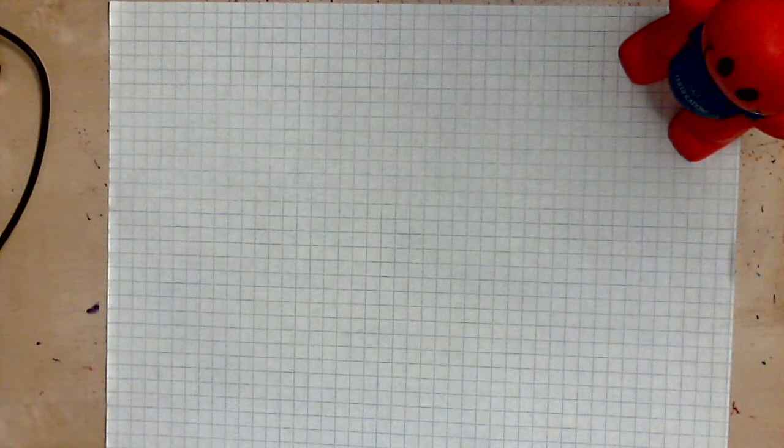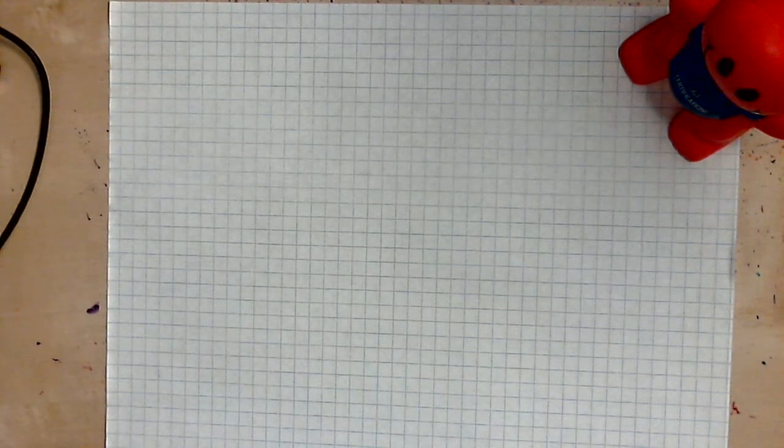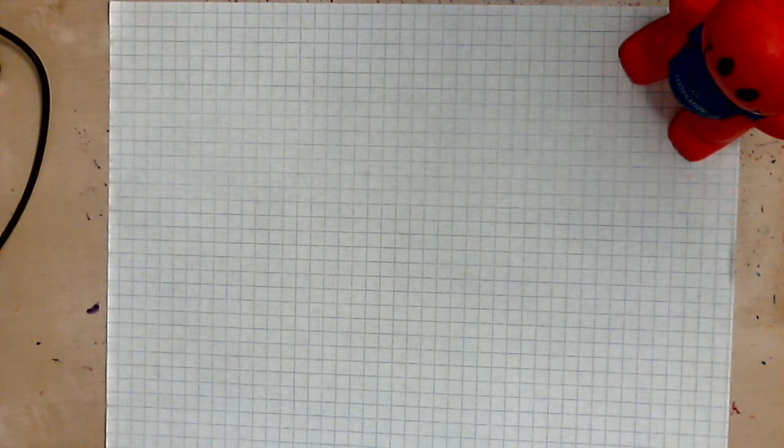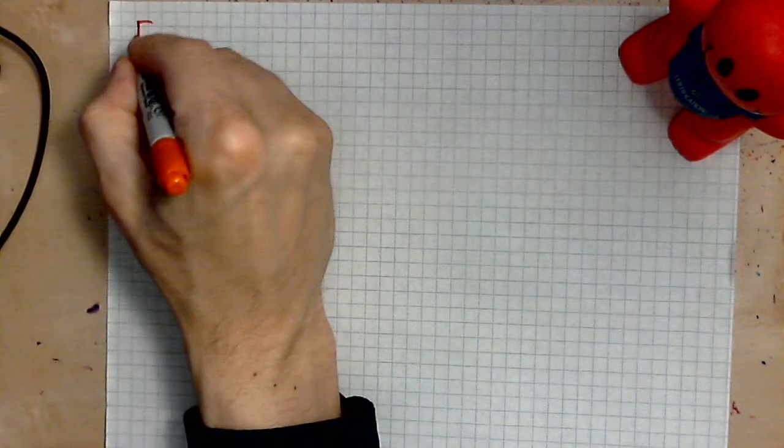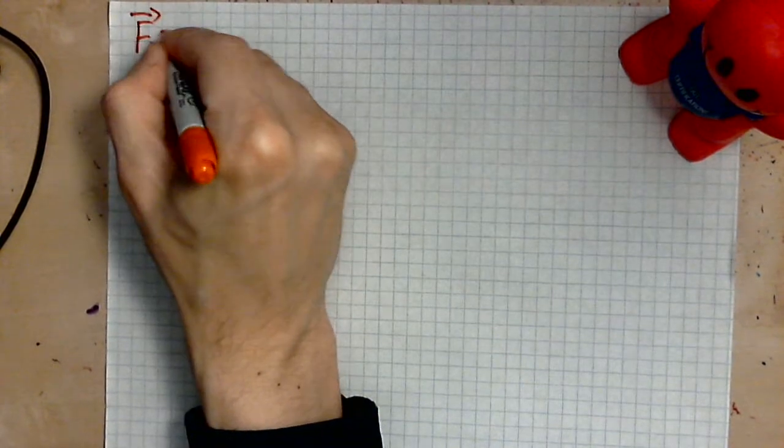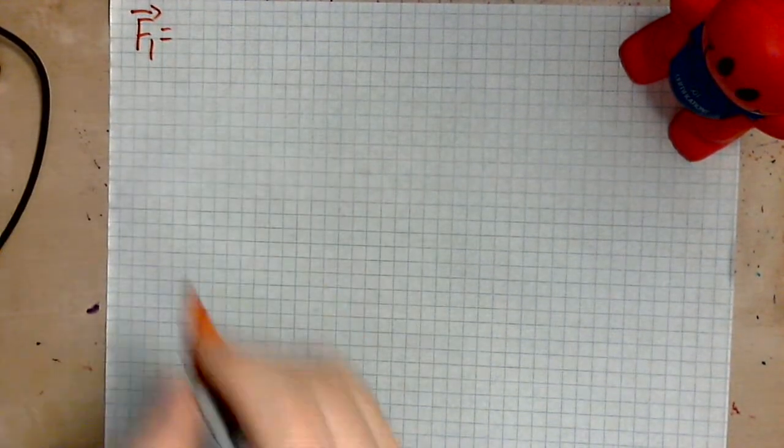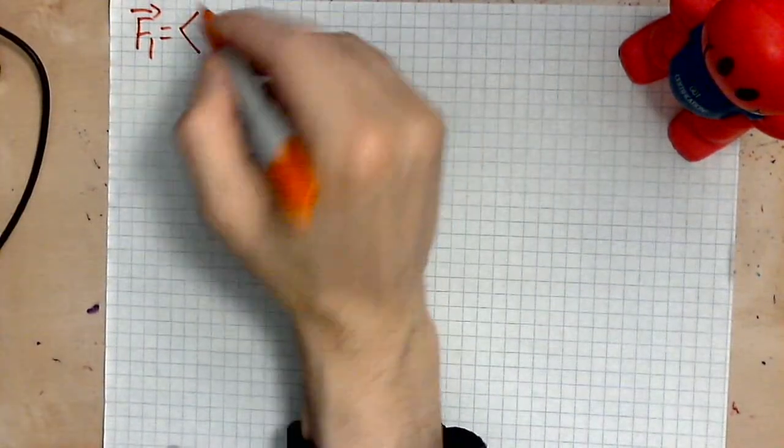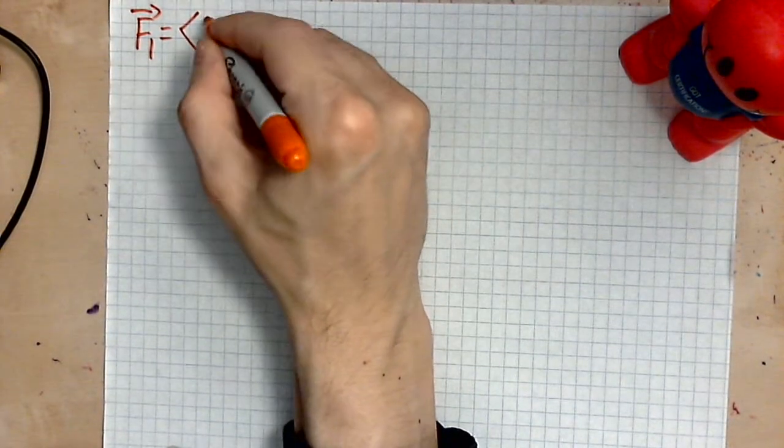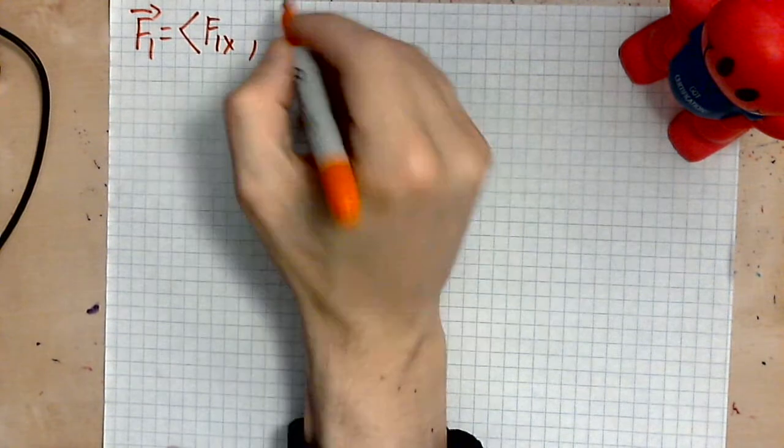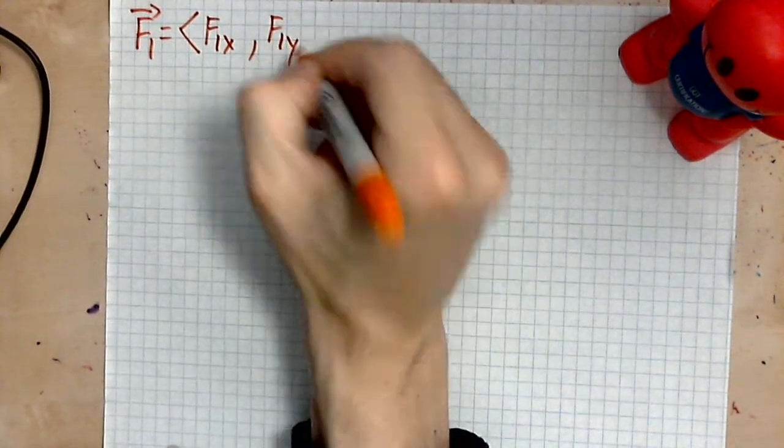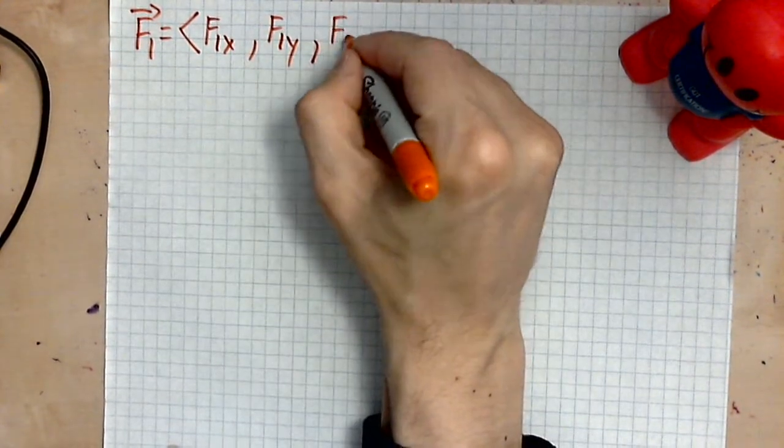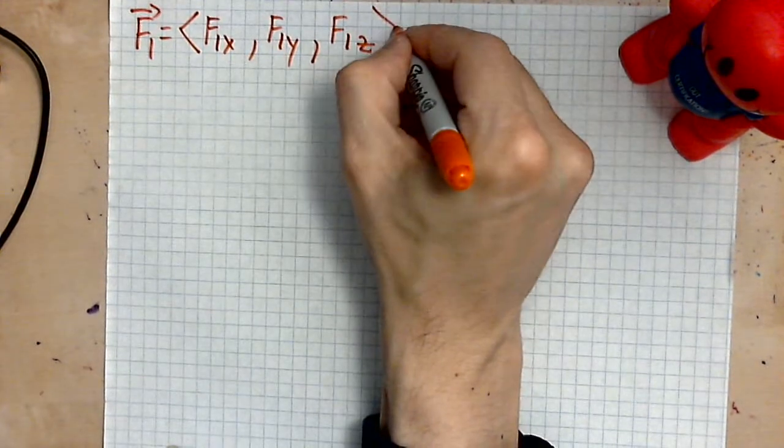So let's take a look at what we have. You may be given a vector and it may look like this, F1 here. And the components of this vector are these. I'm going to use this kind of notation here. So the x component could be described as f1x, and then the y component f1y, and then the z component f1z. These are the components of our vector.